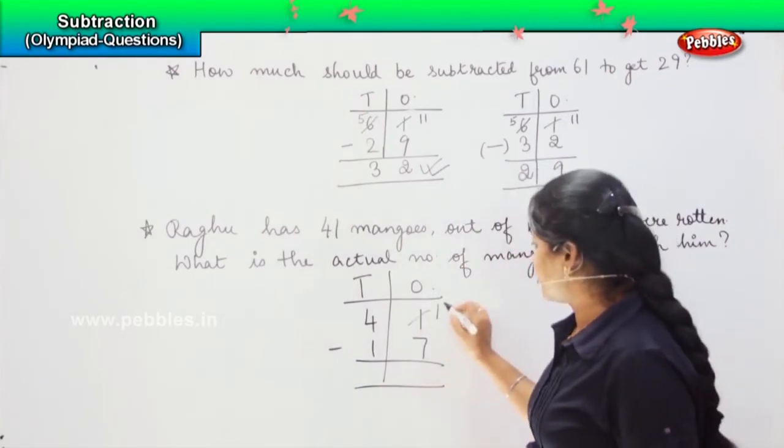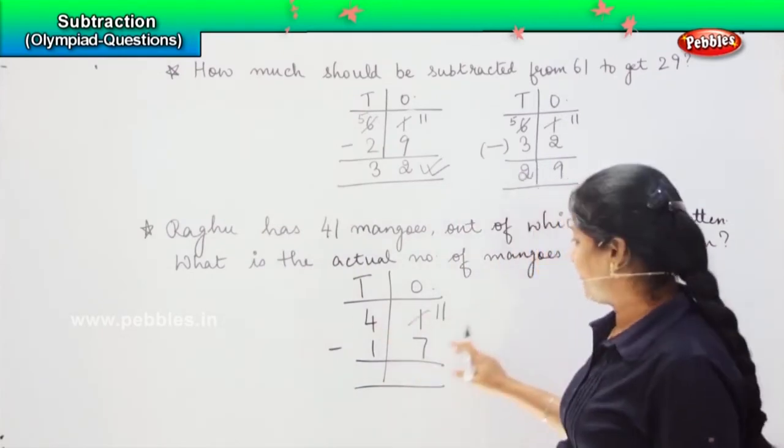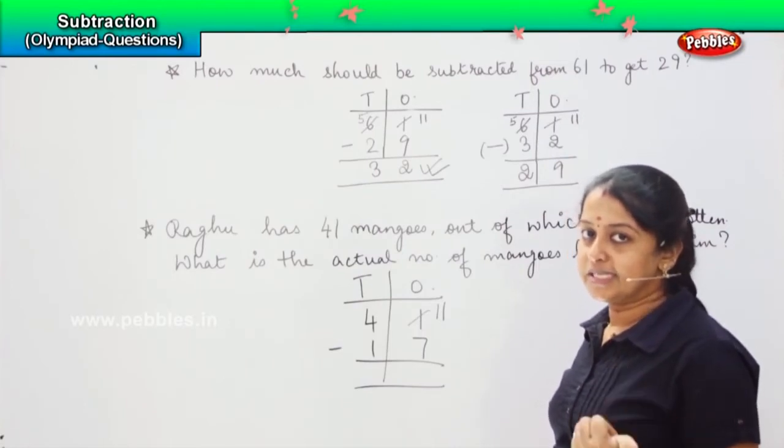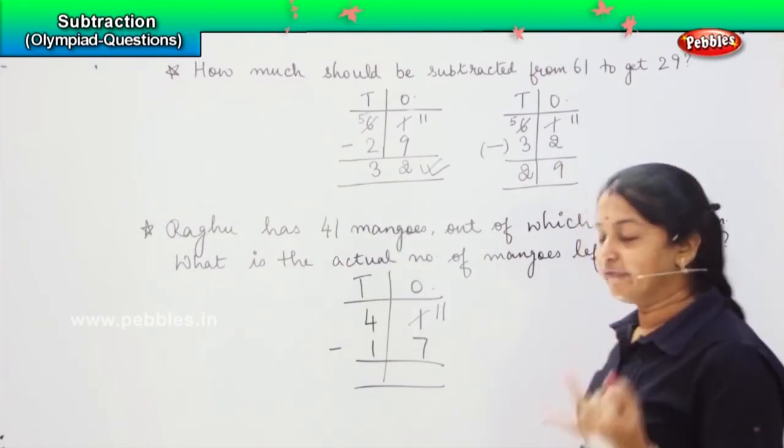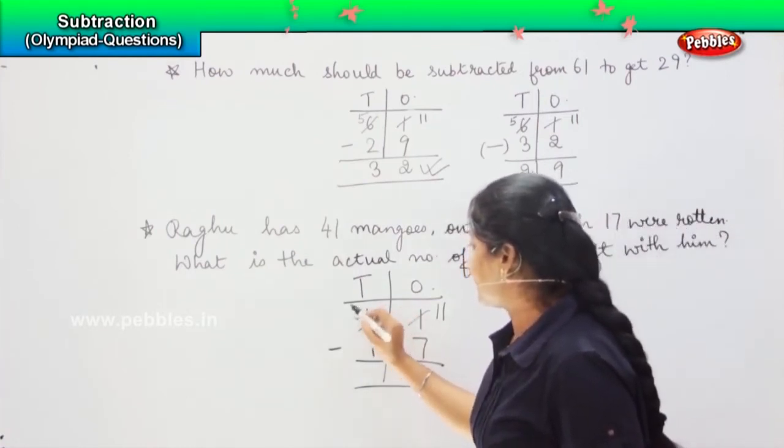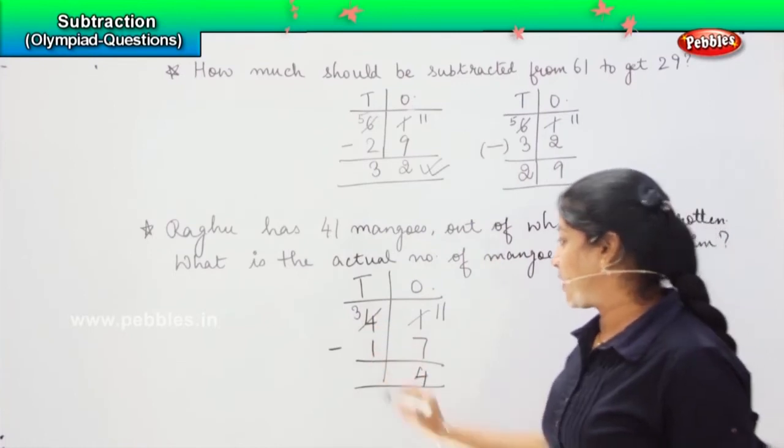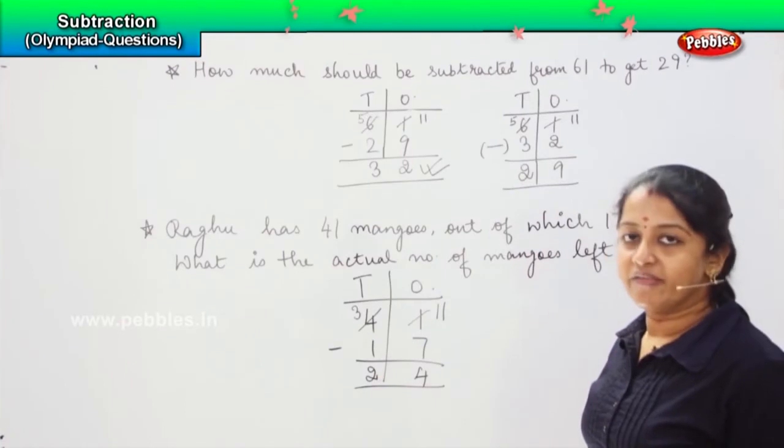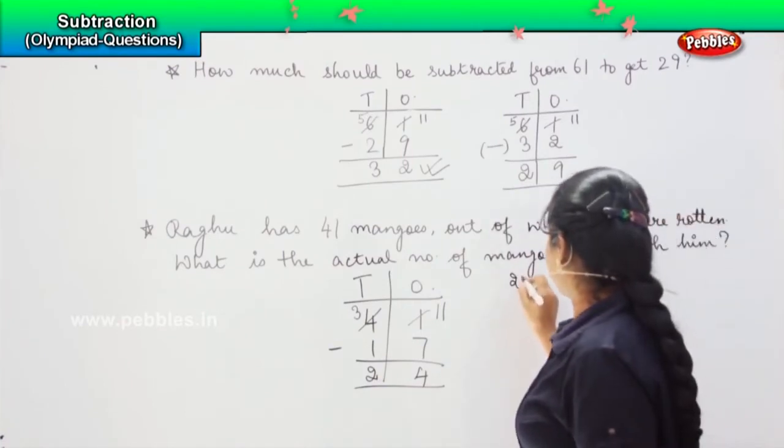So, again you need to borrow from the tens. So, 11 minus 7 is 4. And this will become minus 1, which is 3. So, 3 minus 1 is 2. So, which means that he is having 24 mangoes left.